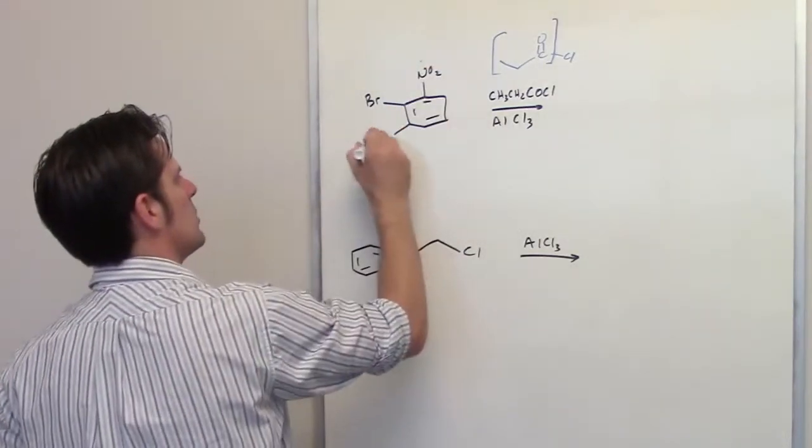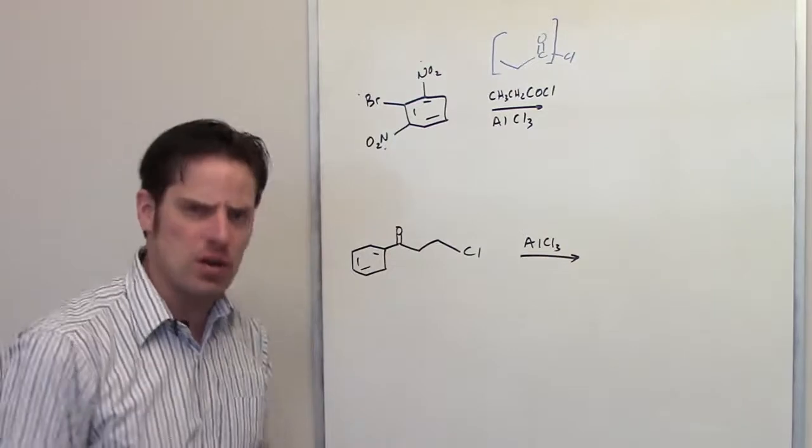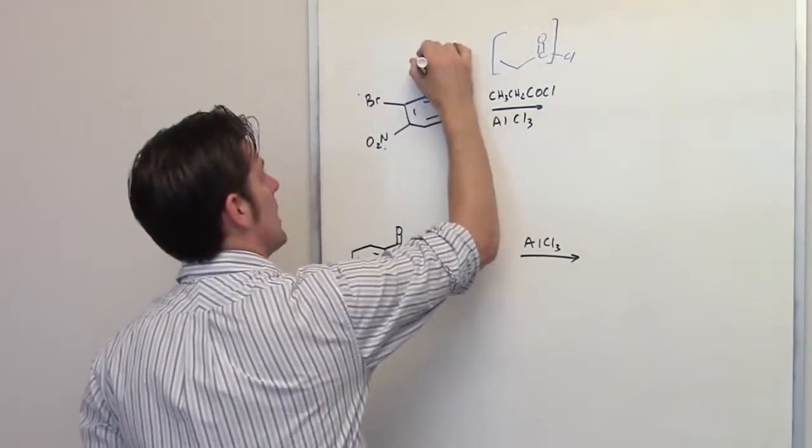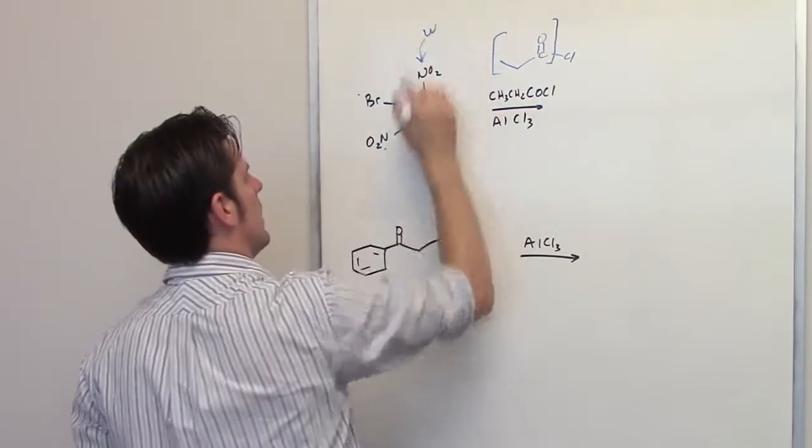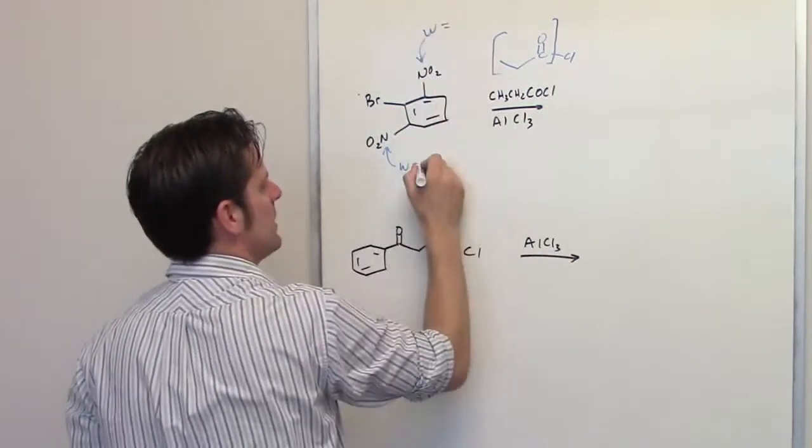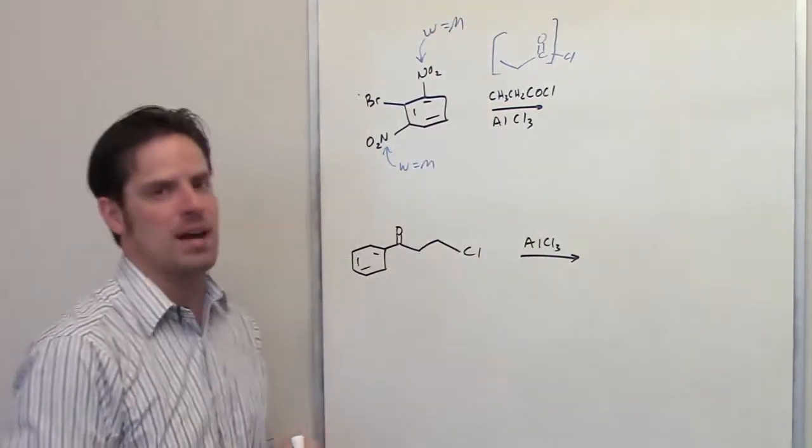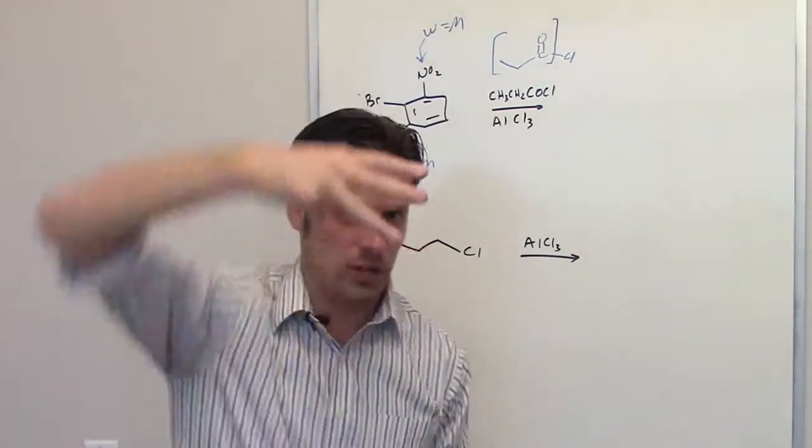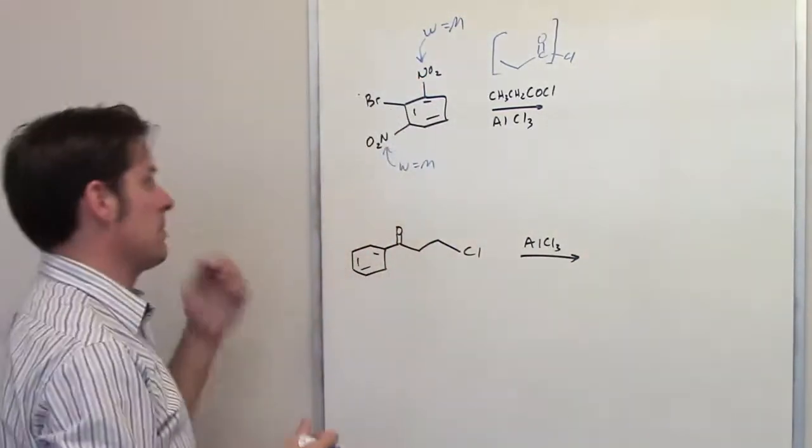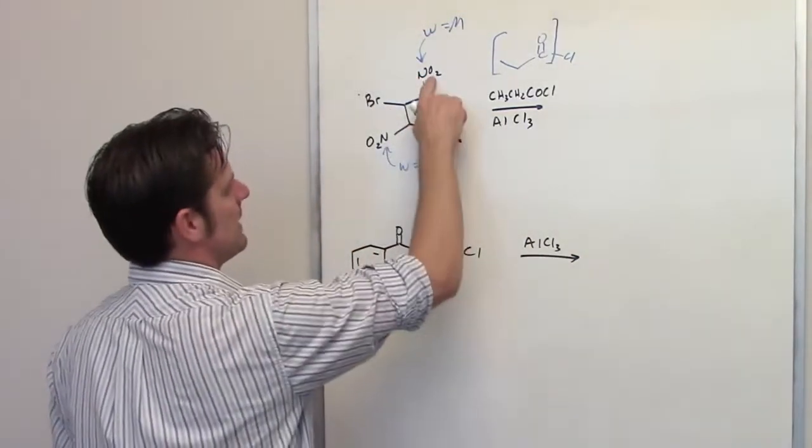So here's what I've got in my lineup: NO2, another NO2, and a bromine. What types of groups are those? Well, NO2s, you should recognize, are withdrawers. So I'm going to write down W next to each of these guys. And what do withdrawers do? Well, we should remember that W equals M. That is, withdrawers make things go meta. I always like to remember W equals M. I know that's kind of a silly mnemonic, but it helps me keep that in my brain.